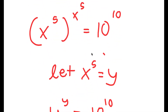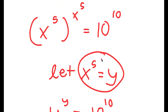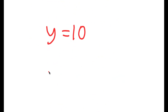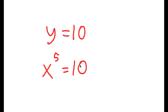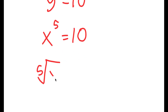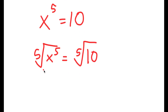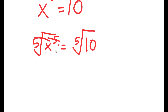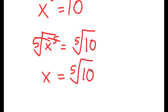Remember, we let x to the power of 5 equal to y. So this means that x to the power of 5 is equal to 10. To solve this, I'm going to take the fifth root on both sides. The fifth root of x to the power of 5 is simply x, so I'm left with x is equal to the fifth root of 10.